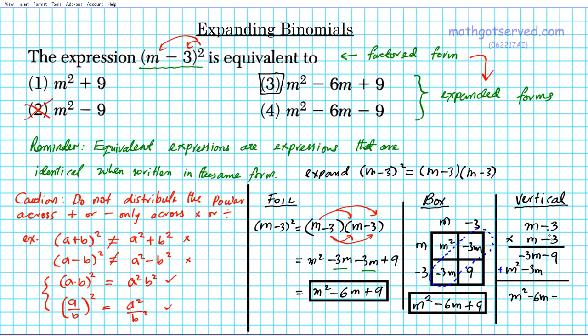And when you add it downwards, you can have m squared minus six m. Oh, I made a mistake here. So negative three times negative three is positive nine. Sorry. Plus nine. And there goes your final answer. You can see that they all match. So the answer is m squared minus six m plus nine.